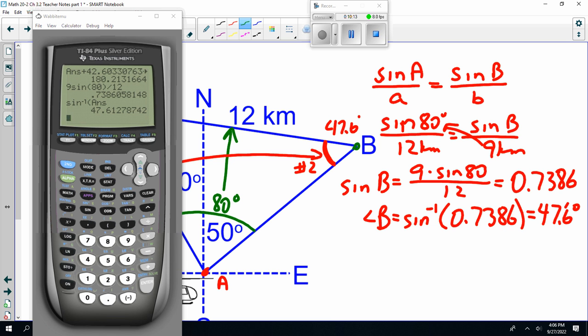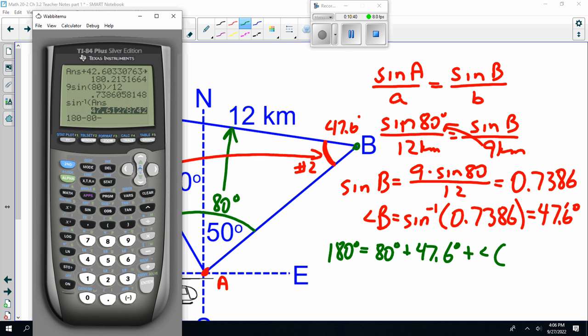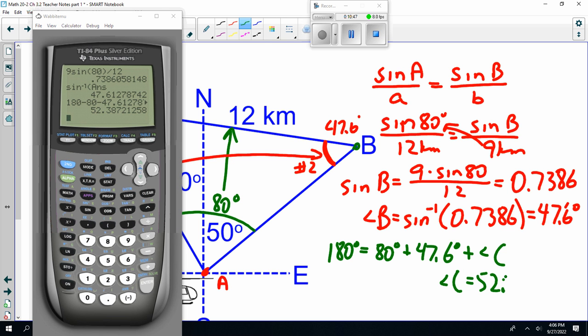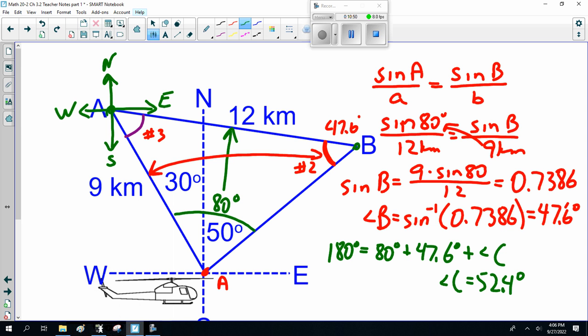Now, the three angles in a triangle equal 180. So, what's the missing angle? I don't know. 180 degrees equals 80 degrees plus 47.6 degrees plus angle, well, I'll call it C, what the heck. It's actually angle A, but 180 minus 80 minus 47.6 is roughly 52.4. Now, I did call it angle number three earlier, but I'm worried, well, anyway, this is 52.4.